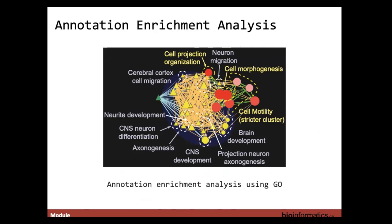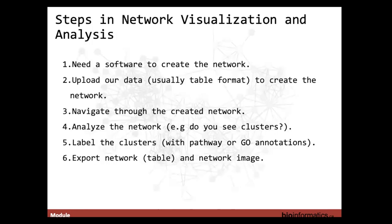Once you identify modules, you can perform annotation enrichment analysis to label them with pathway annotations. Annotation enrichment analysis — discussed by Veronique and Ruth — is not strictly a network analysis tool, but it's one of the more important methods for understanding the biological context of protein-protein interaction networks. The most basic form uses gene or protein annotations from a pathway knowledge base or Gene Ontology to infer which annotations are overrepresented in a gene list from the network.